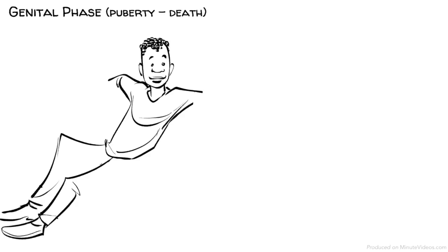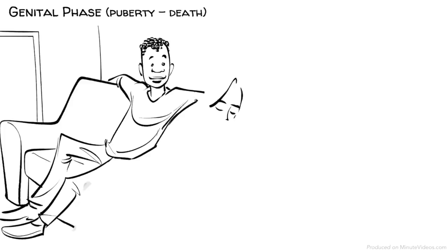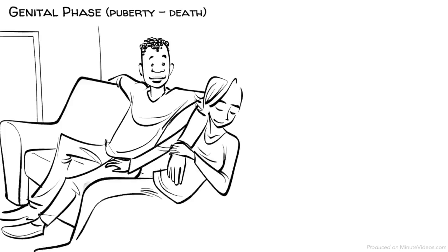The genital phase, puberty to death. Once we reach puberty, our libido starts to become active again and we develop an interest in sexual partners.